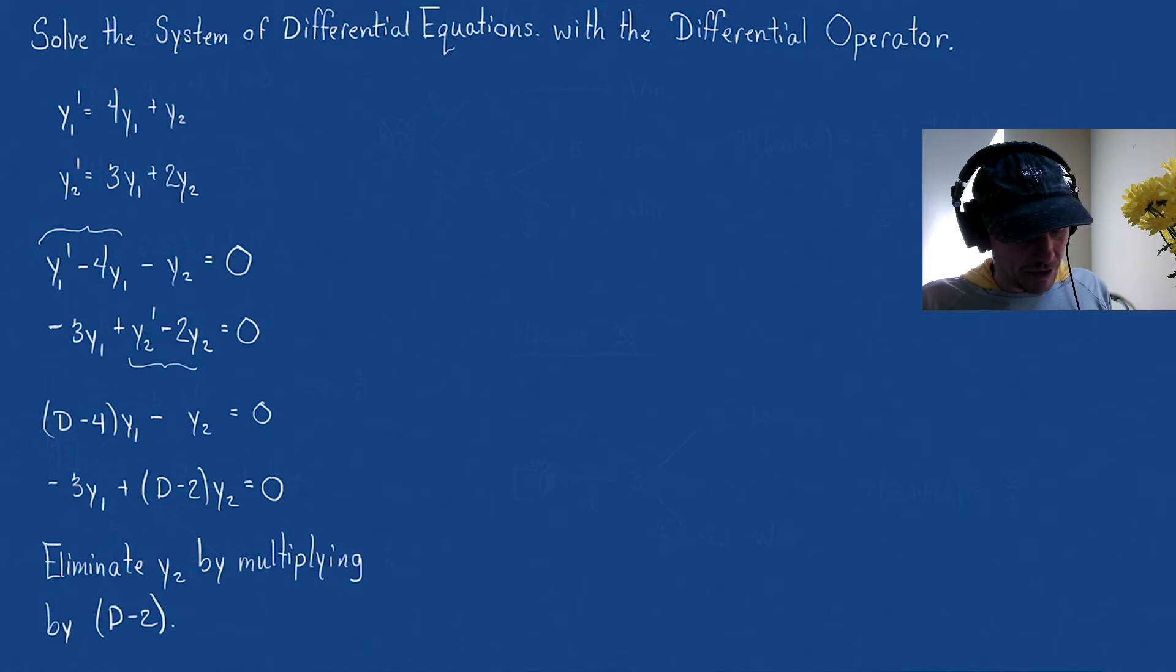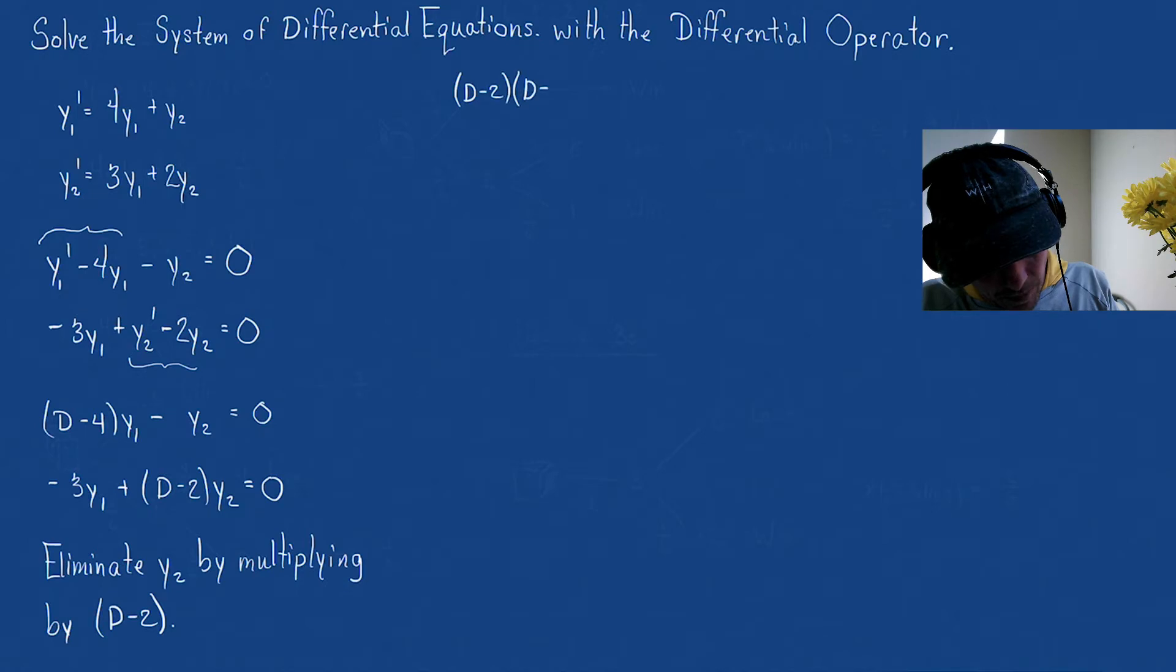So if I multiply that first equation by (D - 2), then I'm going to write this out so we can see this. This is going to become (D - 2)(D - 4)y1 - (D - 2)y2 = 0. And then the second equation, we don't have to change it. This is -3y1 + (D - 2)y2 = 0.